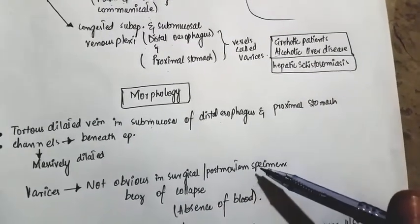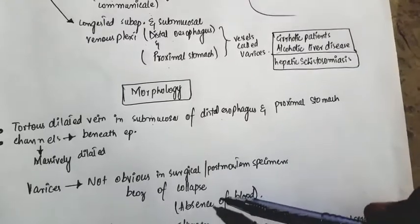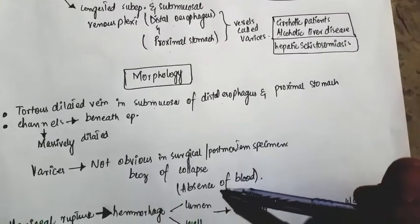But these varices are not very obvious in surgical or post-mortem specimens because of the collapse of the blood vessels due to the absence of blood.